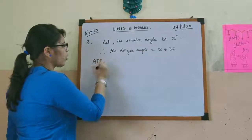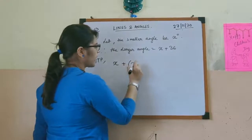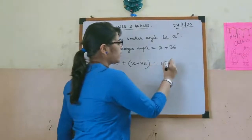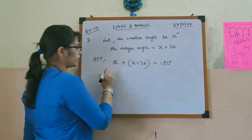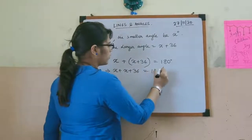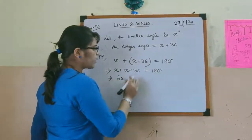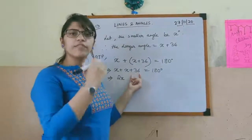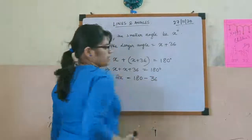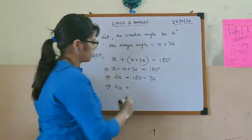According to the problem, the smaller angle x plus the larger angle (x + 36) equals 180. So x plus x plus 36 equals 180. Adding the x terms gives 2x plus 36 equals 180. Shifting 36 to the other side: 2x equals 180 minus 36, which gives 2x equals 144.